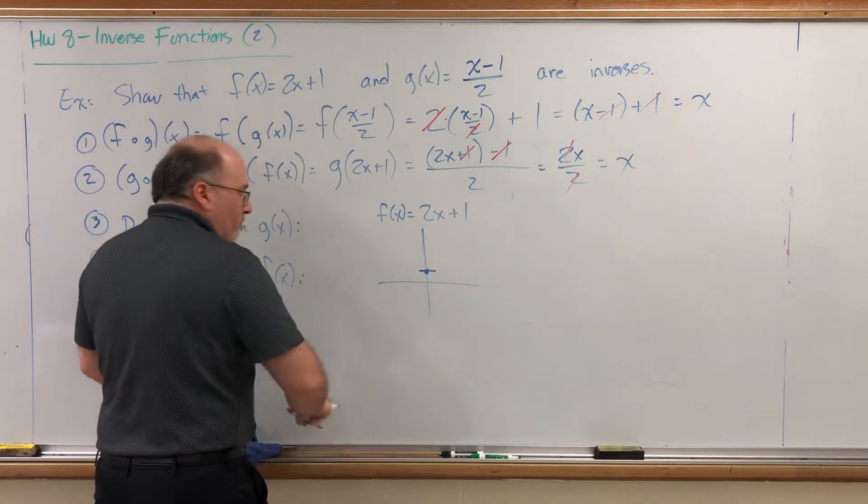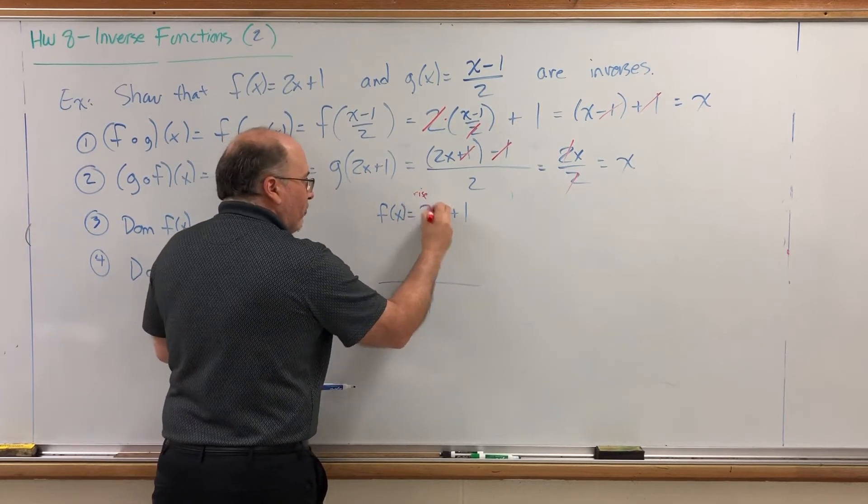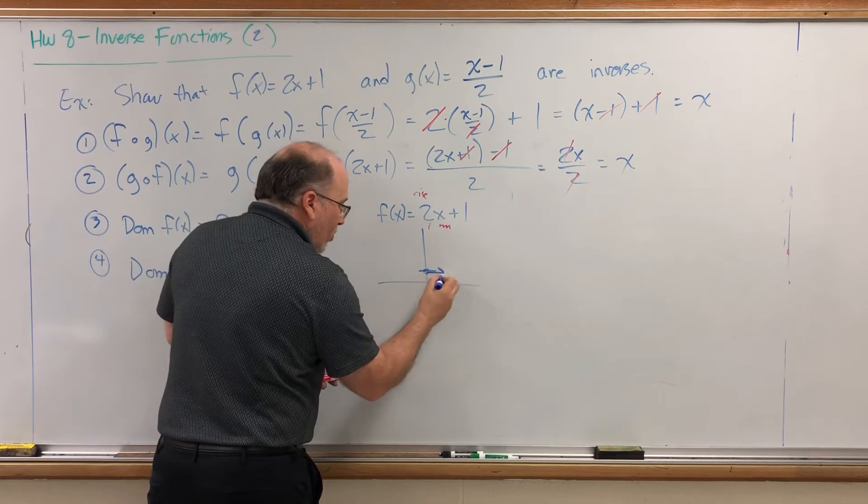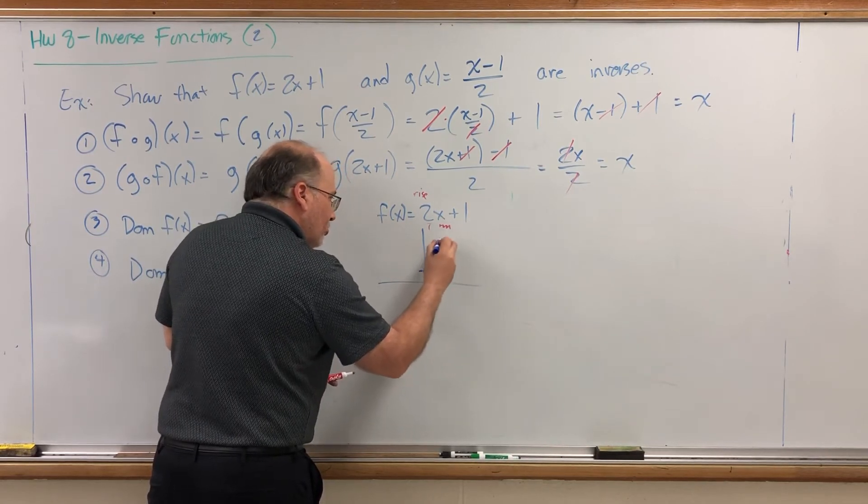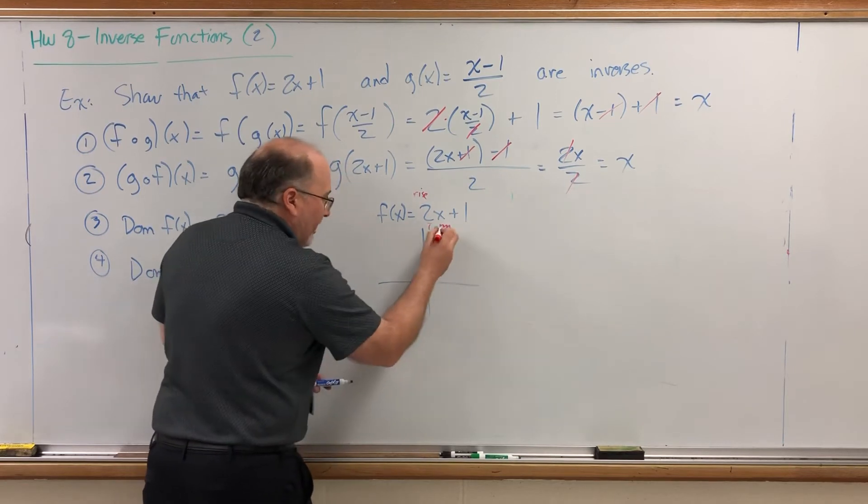The slope is 2. I can interpret that as 2 over 1, and interpret it as rise over run, which means from the intercept, I can run 1, rise 2, put a second point, and connect them to make the graph.